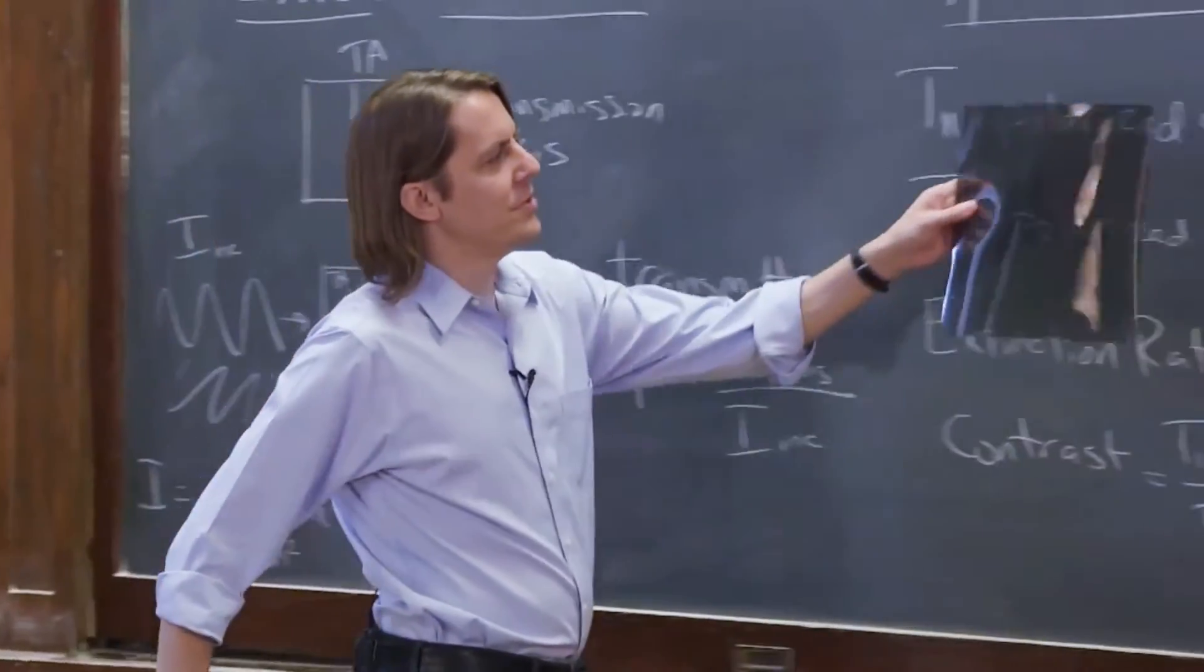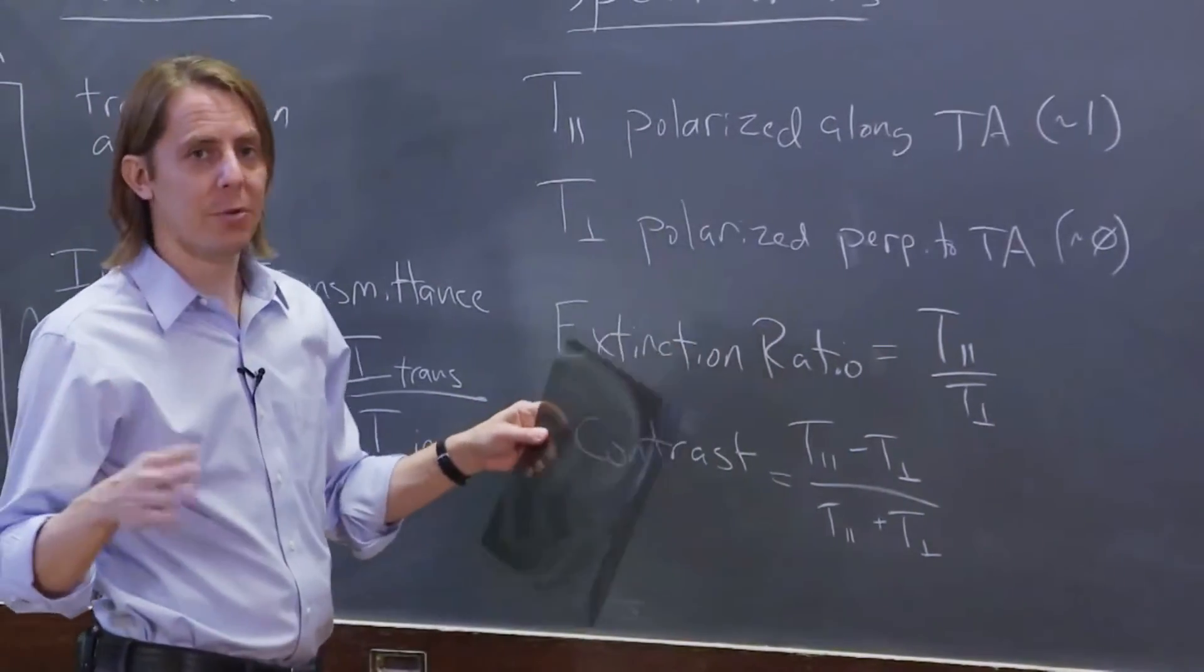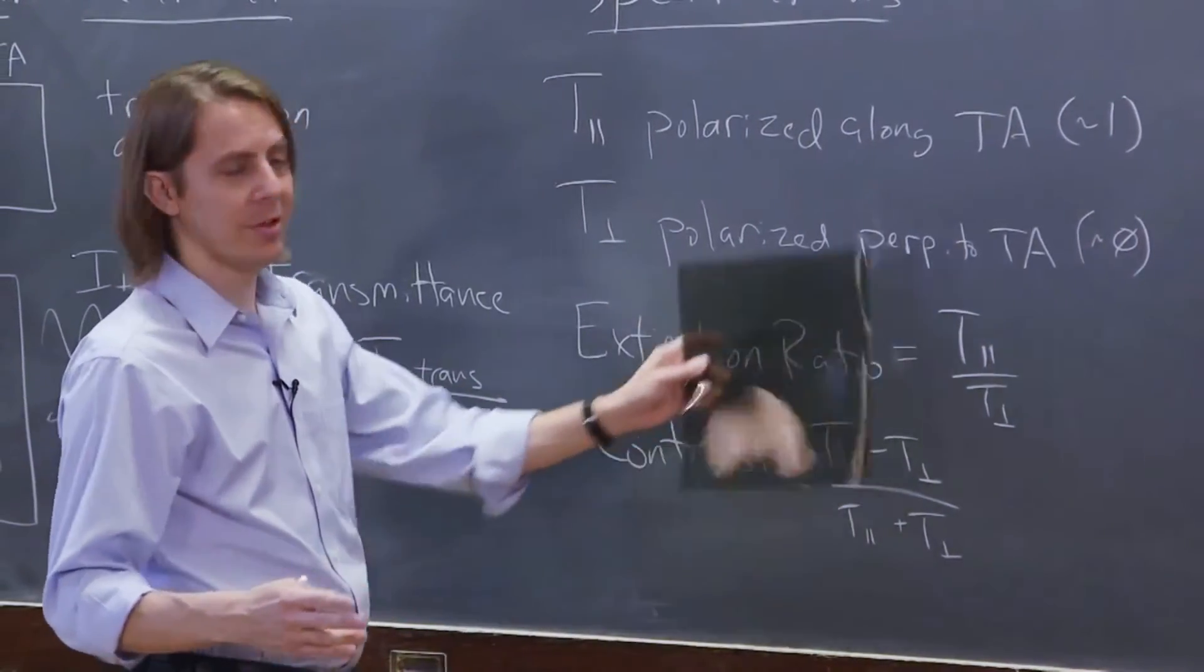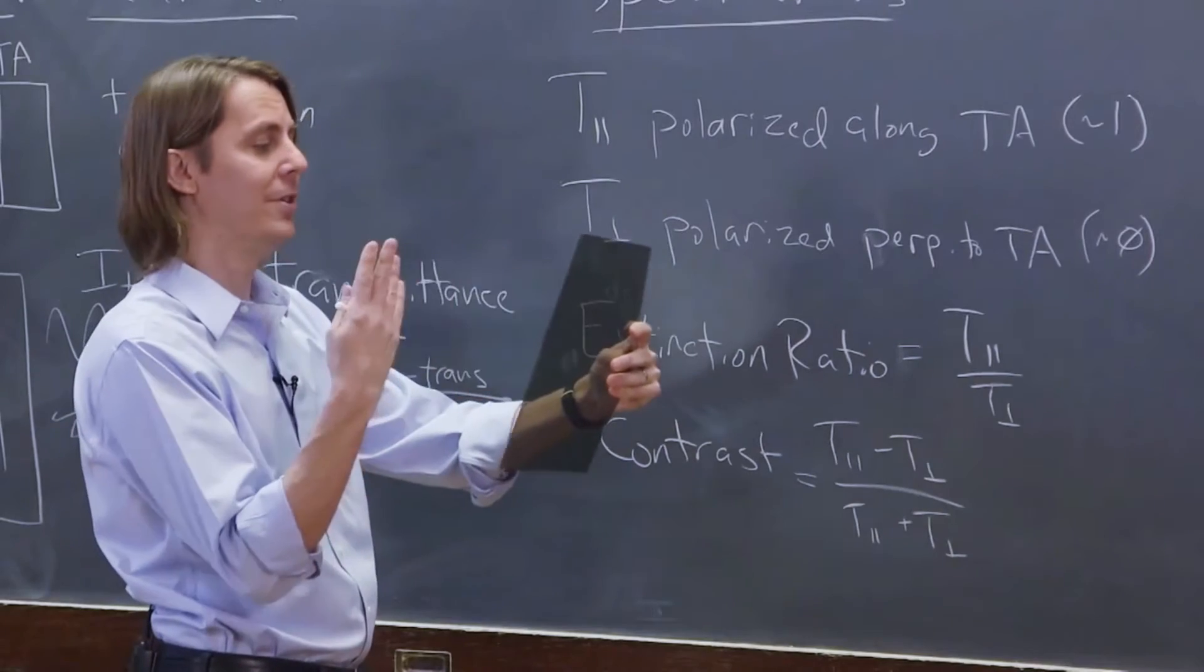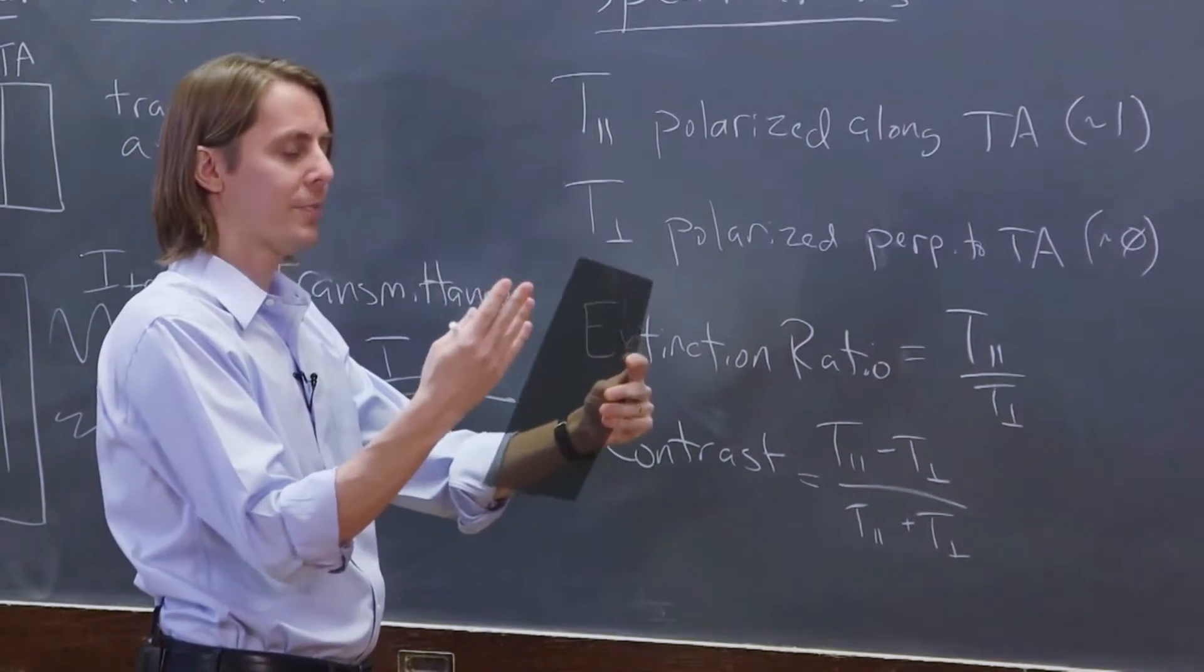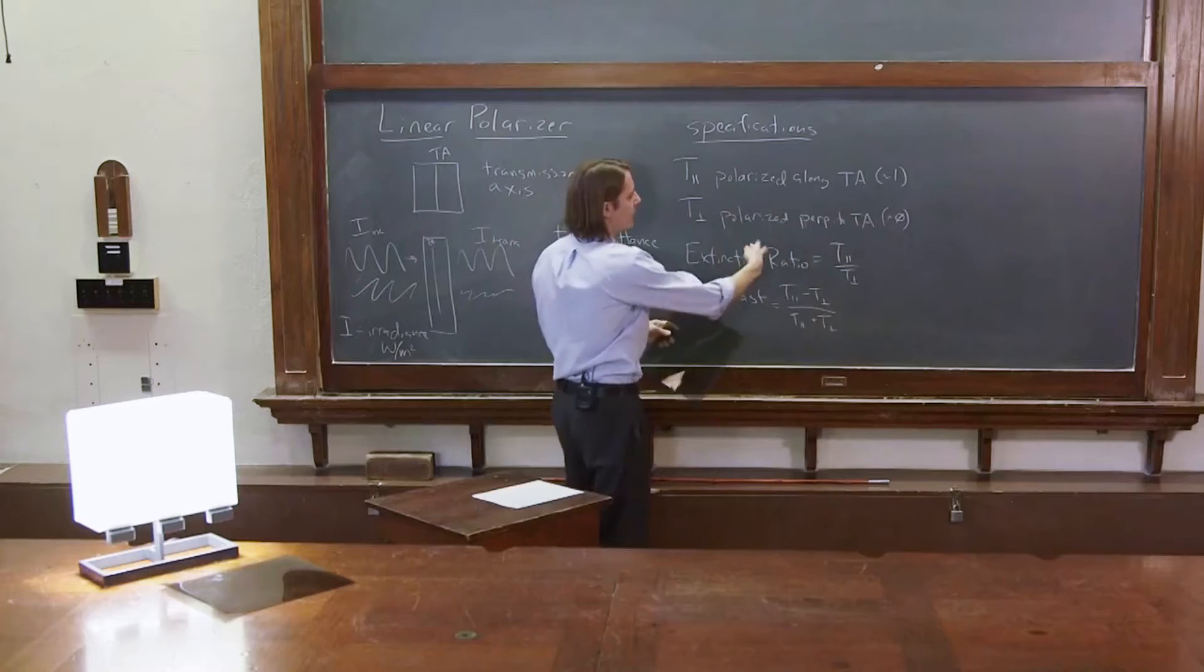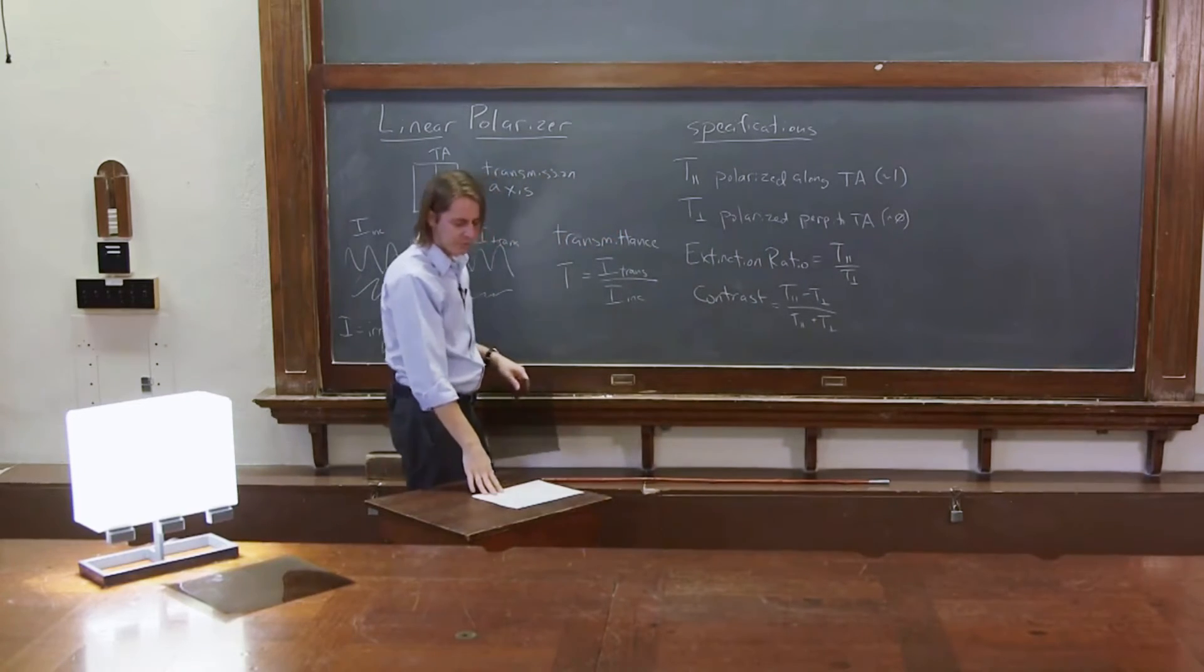You should keep in mind they'll give you these numbers at some typical wavelength or a visible wavelength or if it's a near IR polarizer, maybe a near IR wavelength. But these will be wavelength dependent a little bit. These phenomena in these materials, these anisotropy, can be wavelength dependent. But usually if it's a visible polarizer, it's fairly constant across the visible.